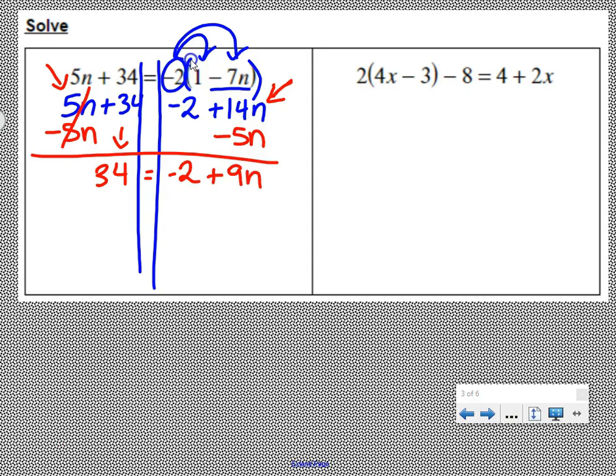Get the negative two over to join the 34 by adding two to both sides. We have 36 equals 9n. Lastly, divide both sides by 9, undo this multiplication here, and we have n equals 4.